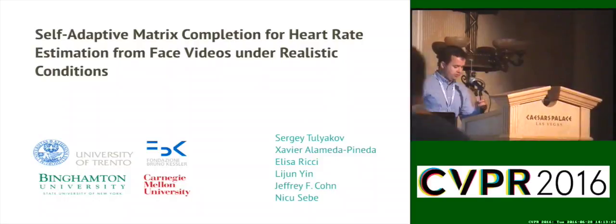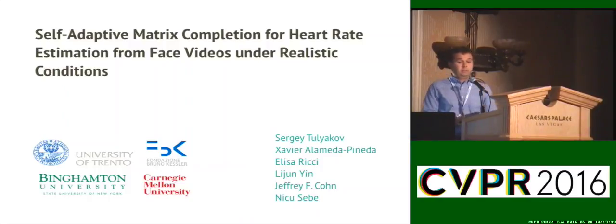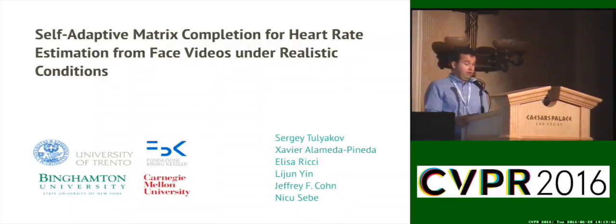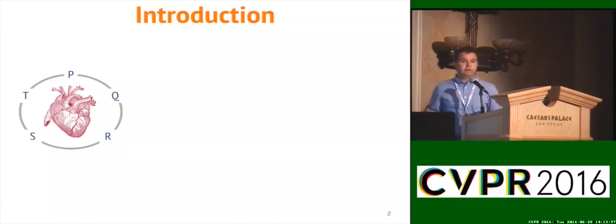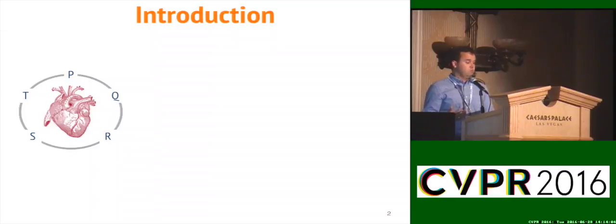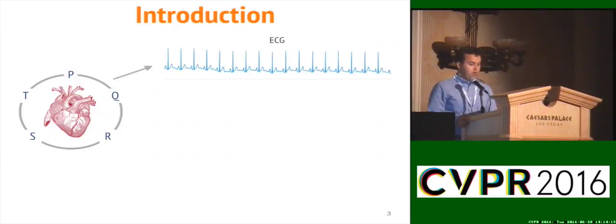Today I'm going to describe our work on how to estimate heart rate from face videos using a self-adaptive matrix completion method. This is joint work with colleagues from several institutions. Not many people know that it's actually possible to recognize heart rate from face video. In a normal regime, the heart passes through states called PQRST, which are visible in an ECG waveform.